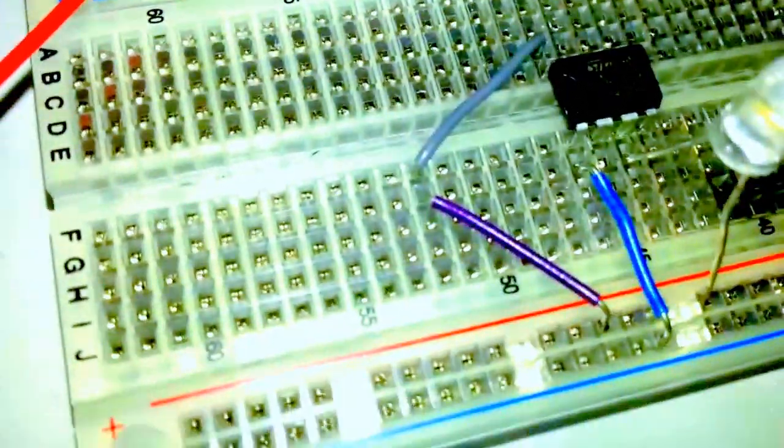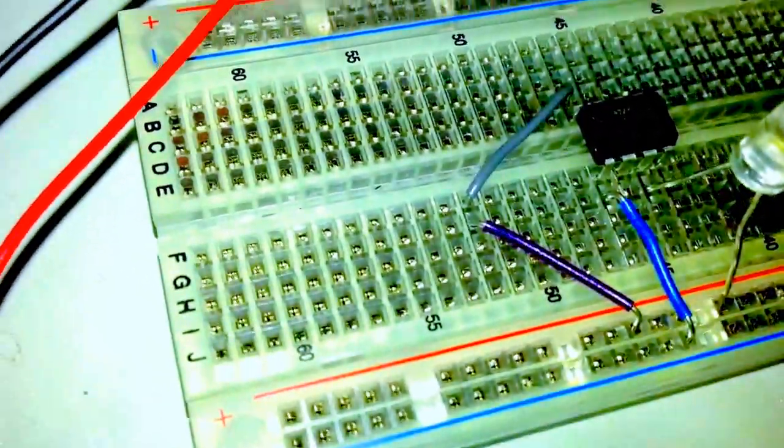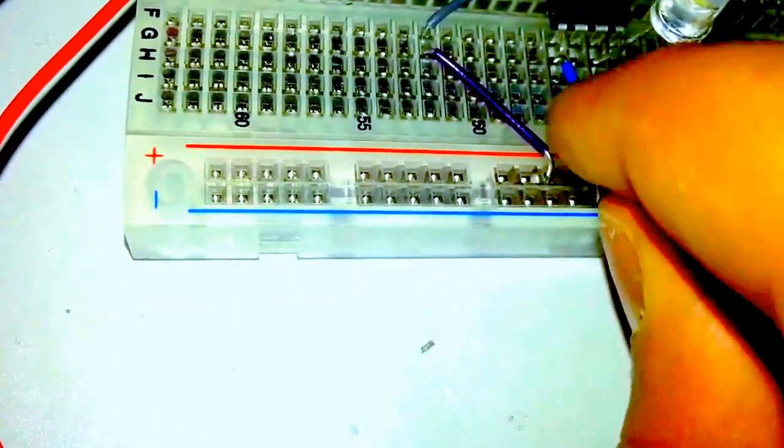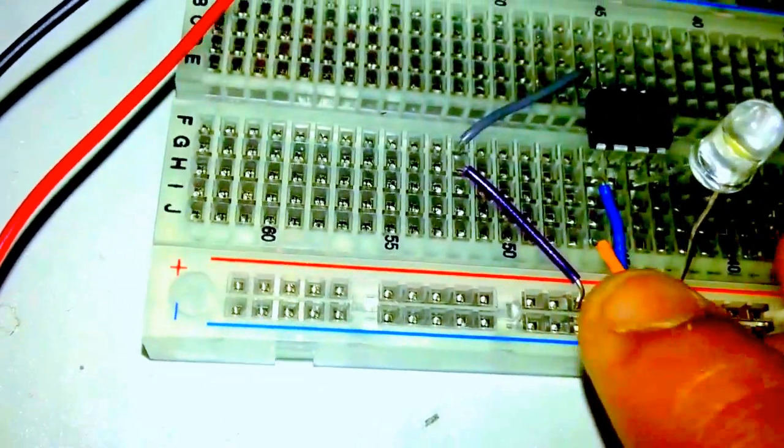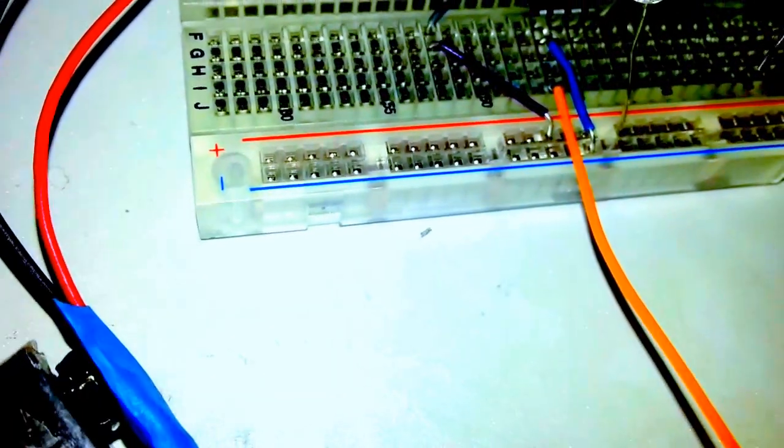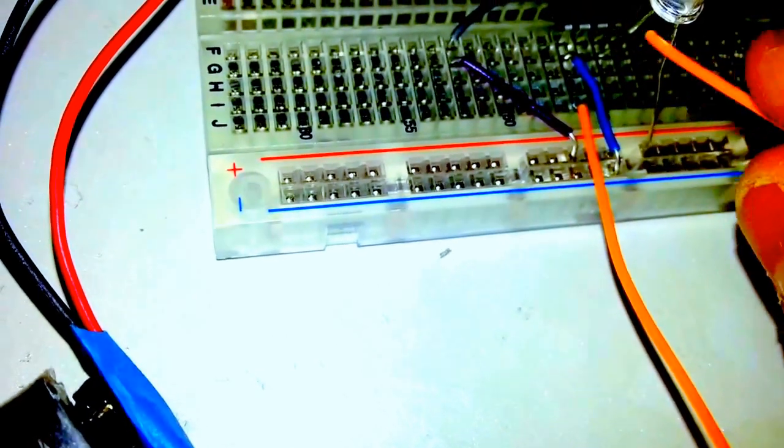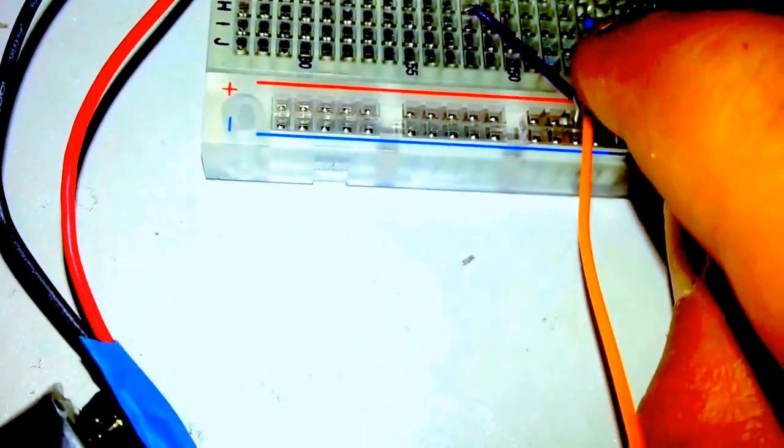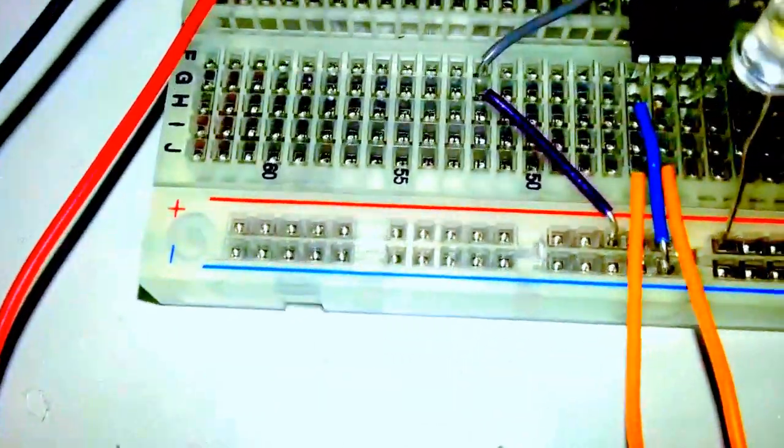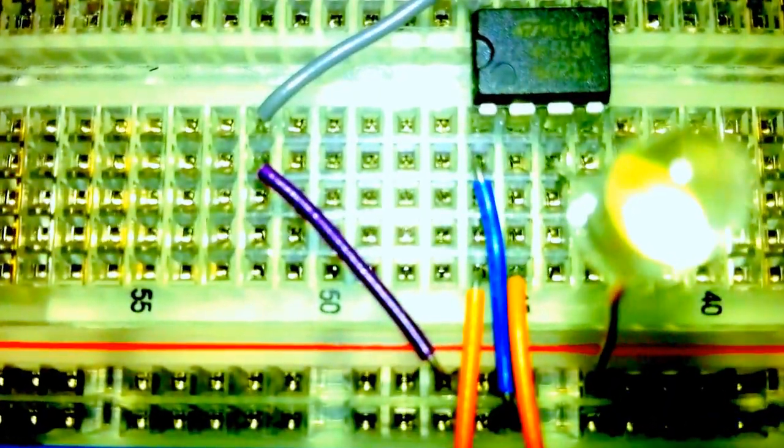One orange wire gets connected to pin number one. Okay. Just like this. Pin number two gets connected to the second, sorry, the second touch plate gets connected to pin number two. Just like this. You can see that. Okay.